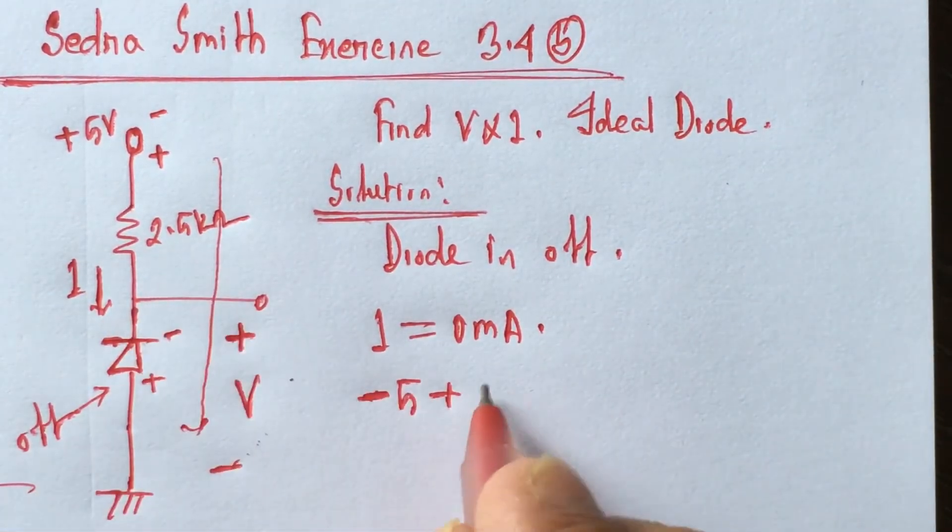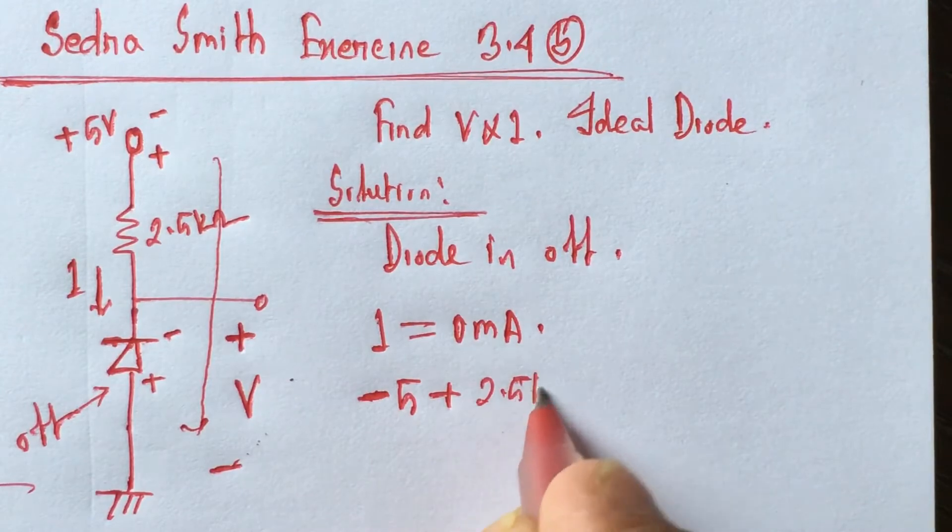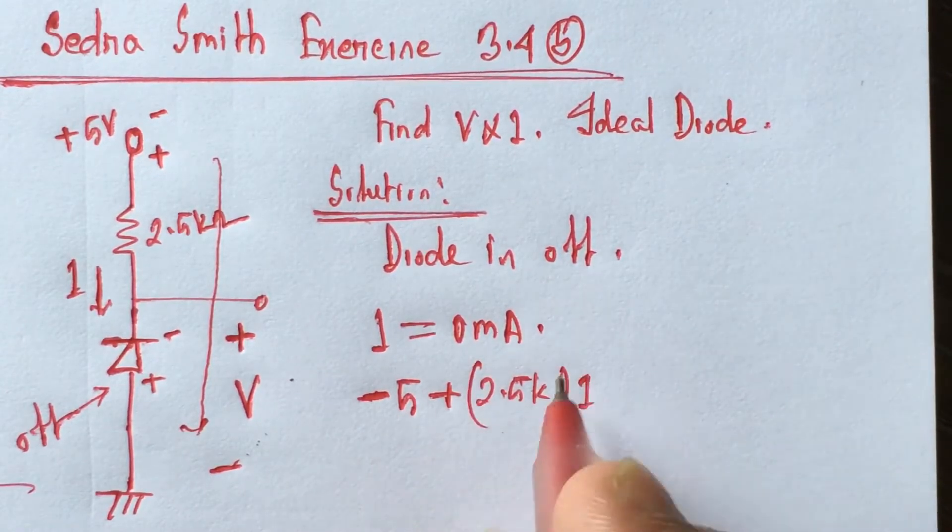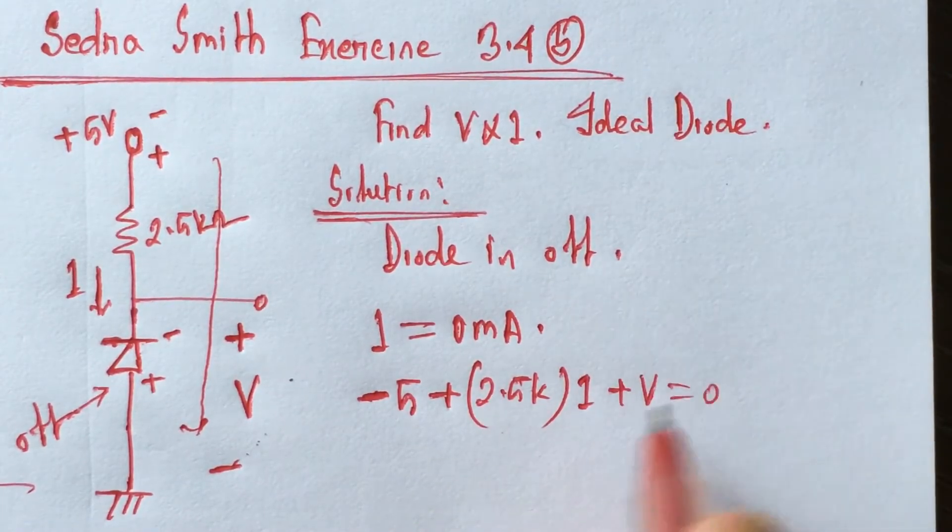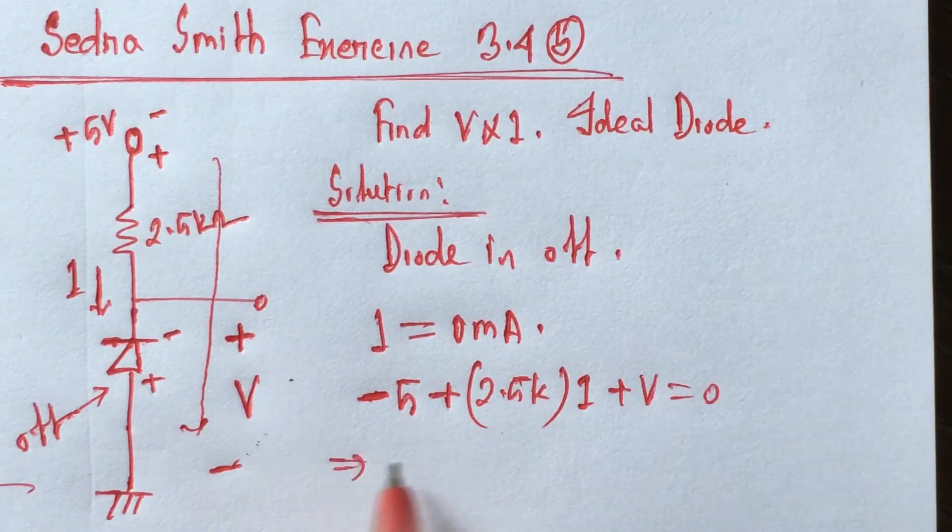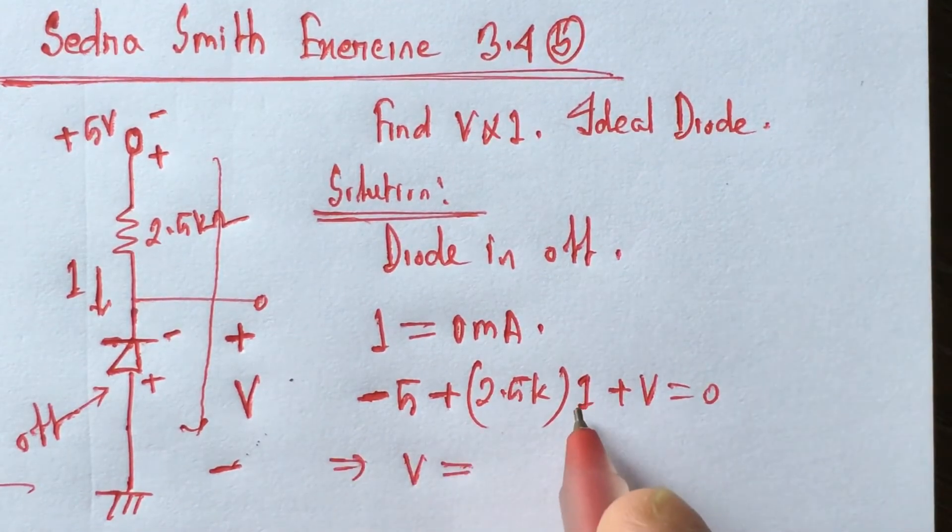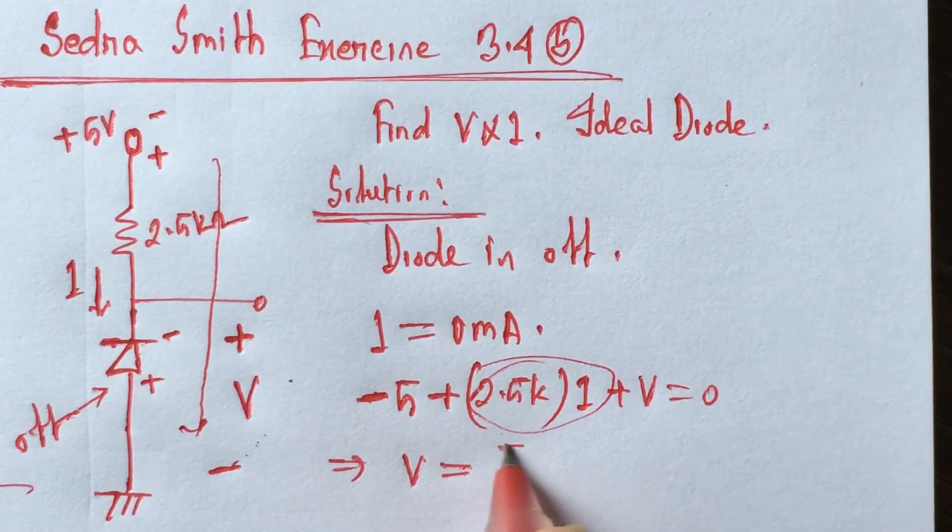plus 2.5k into I plus V is equal 0. So that is, V is equal, since I is equal 0, so this value is also 0. So V is equal 5 volt.